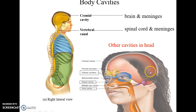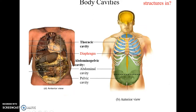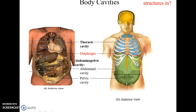Body cavities include the cranial cavity (housing the brain and meninges), the vertebral canal (housing the spinal cord and meninges), and other head cavities such as the orbital cavities for the eyes, nasal cavities, and oral cavity with the tongue and teeth. The thoracic cavity contains the lungs and heart. The diaphragm, a thin sheet-like muscle, separates the thoracic cavity from the abdominal pelvic cavity, which can be further divided into the abdominal cavity and the pelvic cavity.